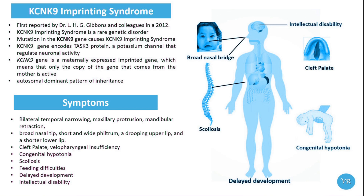The KCNK9 gene encodes a potassium channel known as K2P9.1, also called TASK-3, which belongs to the two-domain potassium channel family. These channels are involved in maintaining the resting membrane potential and regulating neuronal excitability.